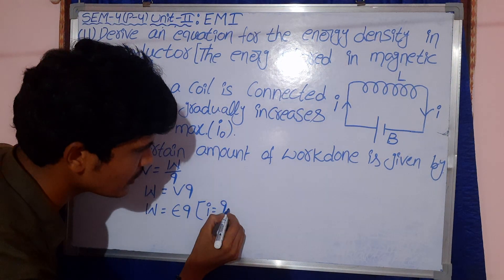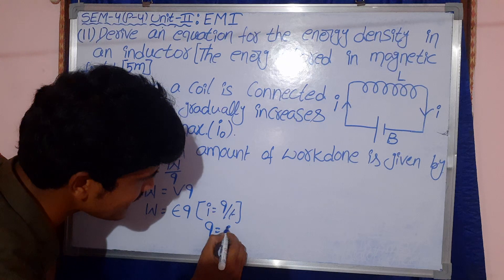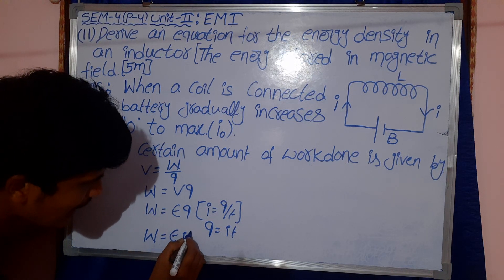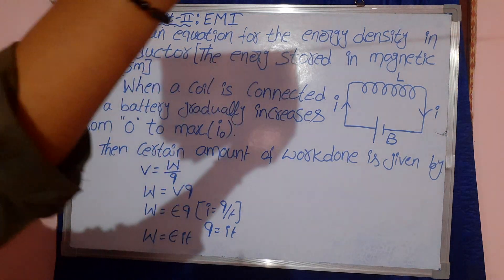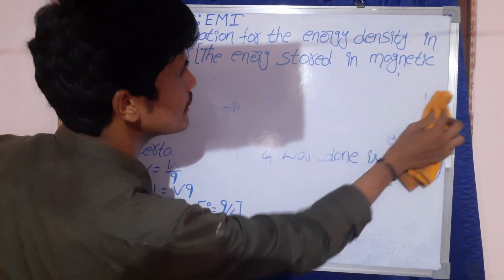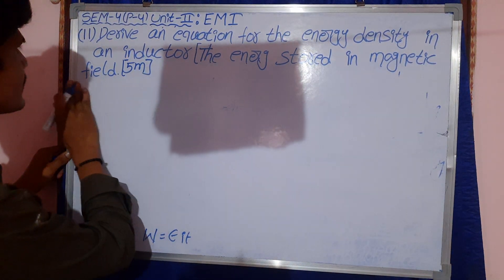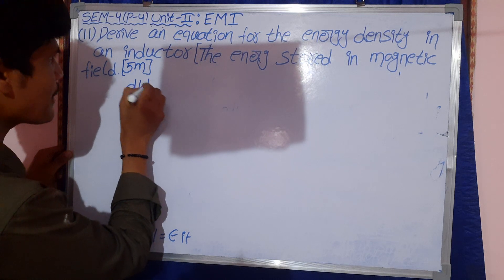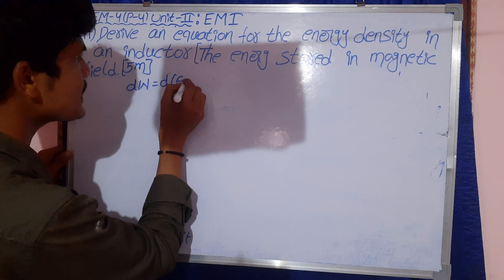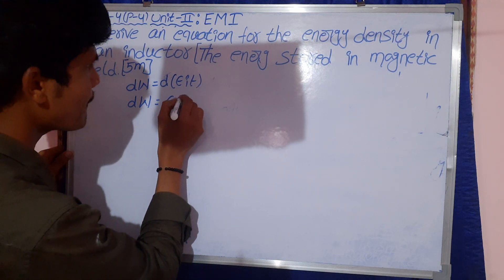Since i = Q/t, then Q = it. So W = εit. Taking the differential, dW = ε·i·dt.